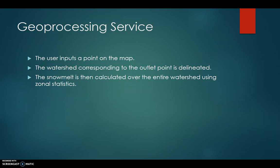How RAP works is the user chooses a point on the map that is the outlet of the watershed, and then the watershed corresponding to that point is delineated. Then using zonal statistics, the average snowmelt is calculated over that area, and multiplying that average depth by the area of the watershed gives us a volume of snowmelt.